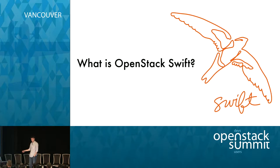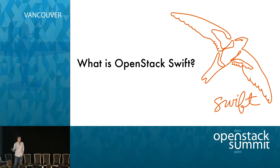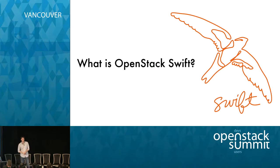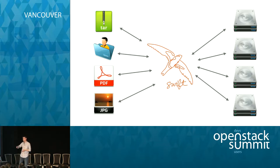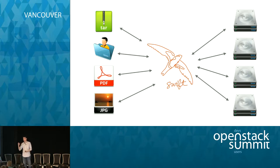First, to briefly cover it: what is Swift and why are we here? Swift is an object storage system that stores data at multi-petabyte scale, globally distributed, all that kind of stuff. And yesterday was the fifth anniversary of it being in production at pretty large scale, which is pretty cool. So happy birthday, Swift.